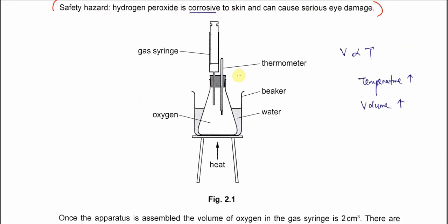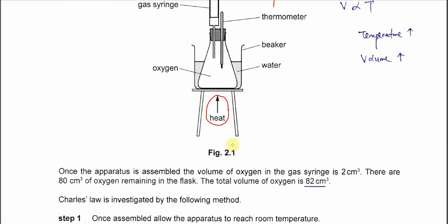This is a setup used to investigate Charles' Law. We have a gas syringe to measure the volume change, and the thermometer is used to measure the temperature. So we can get T and V. The oxygen was collected and put in this conical flask, and the temperature can be controlled using heating. We will discuss this setup again later.